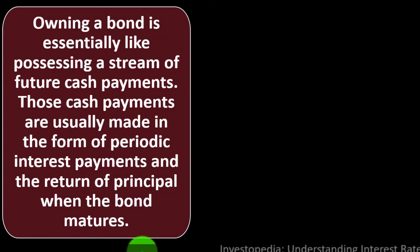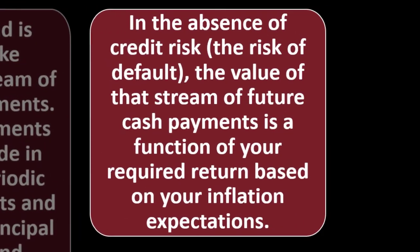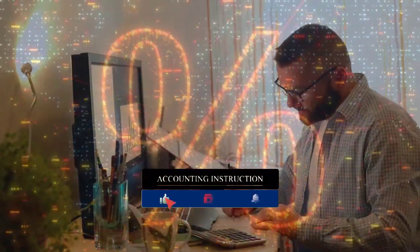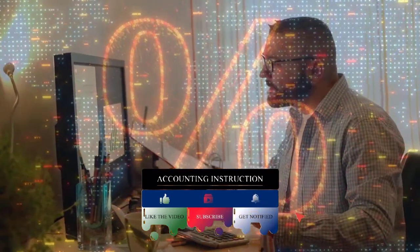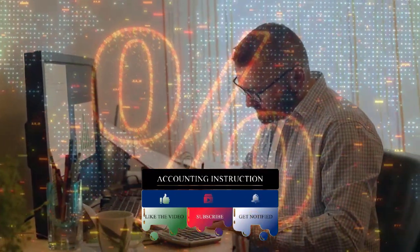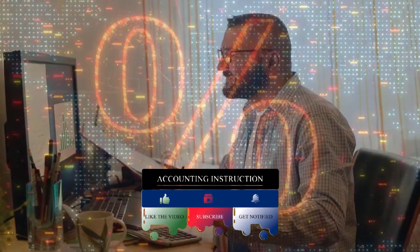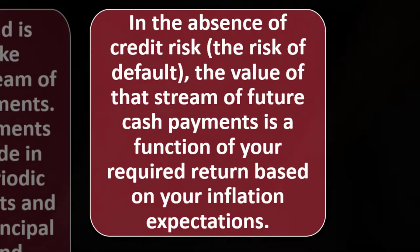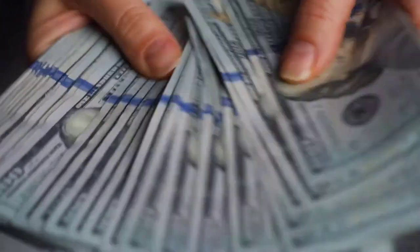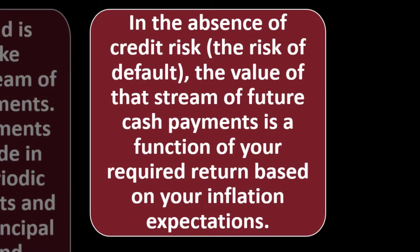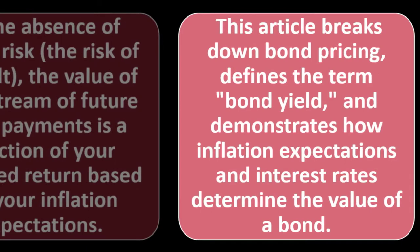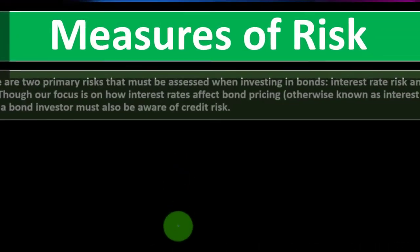Those cash payments on a bond are usually made as periodic interest payments plus return of principal when the bond matures. In the absence of credit risk — the risk of default — valuing a bond involves figuring out the present value of future interest payments. This article breaks down bond pricing, defines bond yield, and demonstrates how inflation expectations and interest rates determine a bond's value.